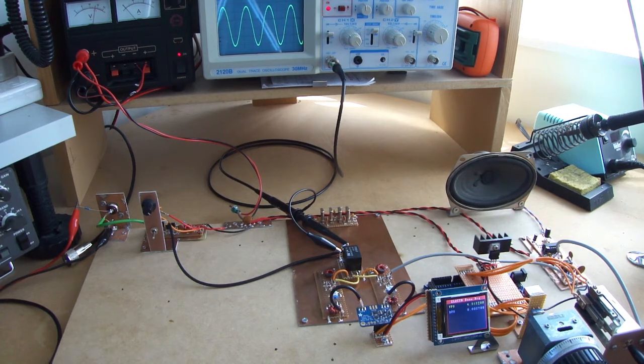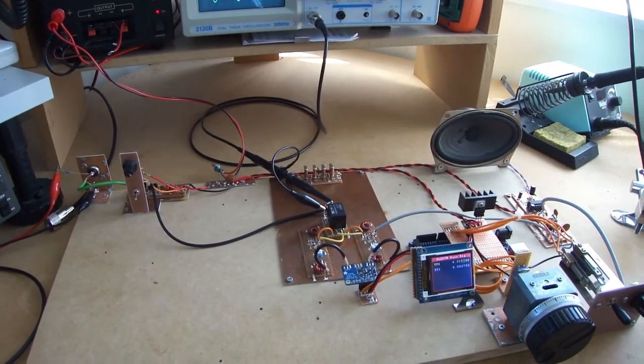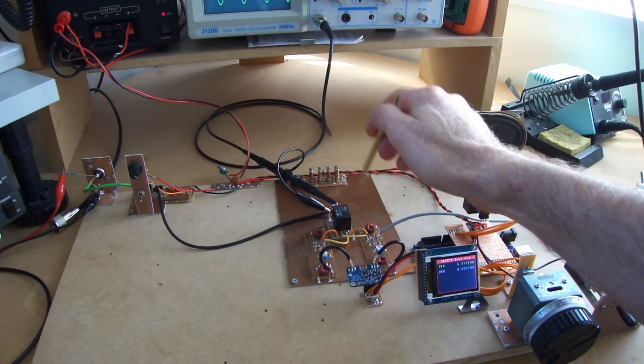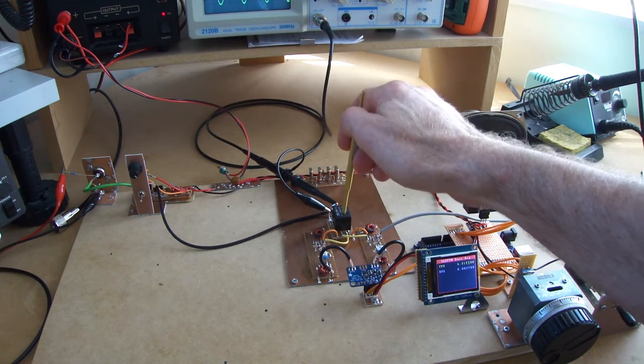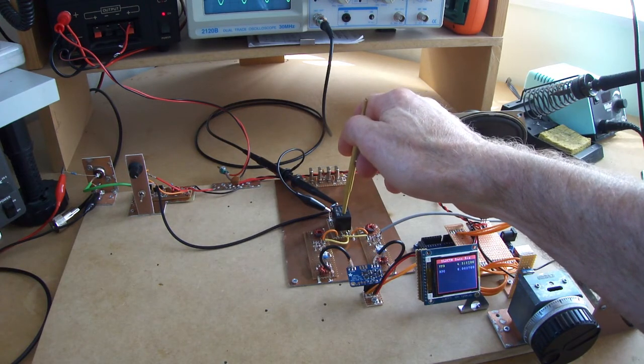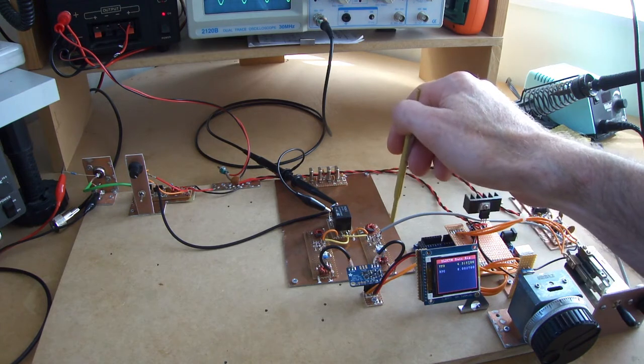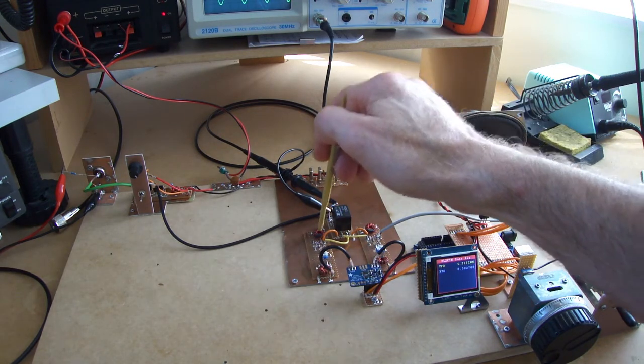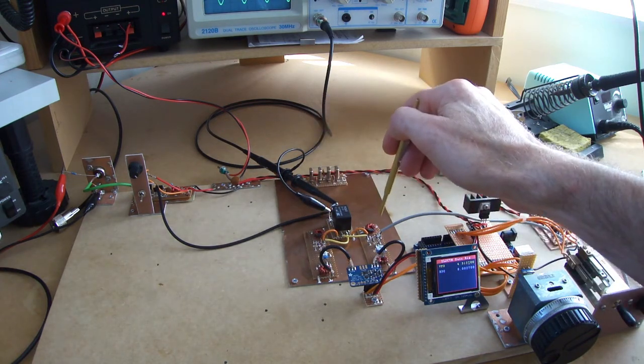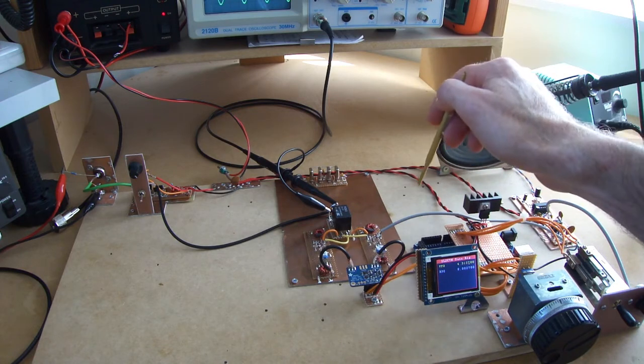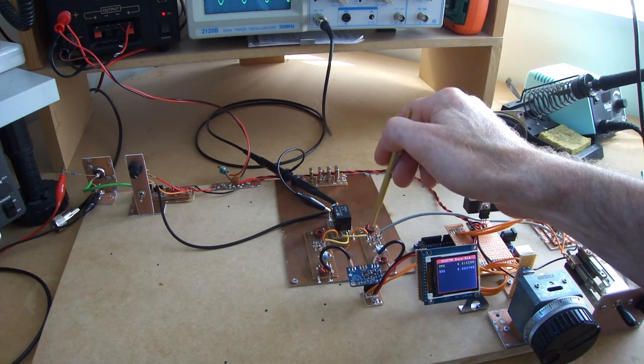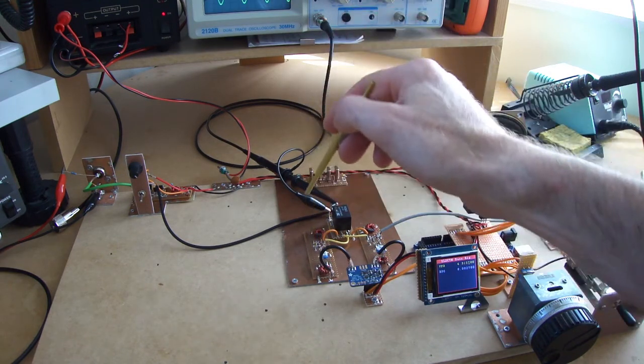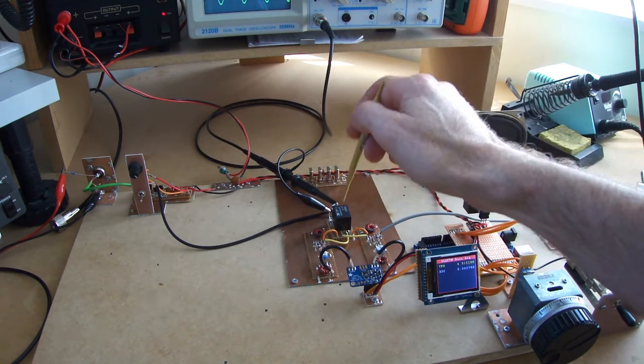So next steps will be to turn this into a single conversion superhet. So we'll look at designing up the IF amplifiers, one here and one here. We will utilise this relay again which allows us to basically steer RF through clockwise through the circuit. If it's on receive it'll come from here, straight up, around and down. If it's on transmit and we build the microphone amplifier eventually it'll come in through here, cut across, up around, cut back across to here and then transformed up through this mixer up to our desired RF. So we will use that again.